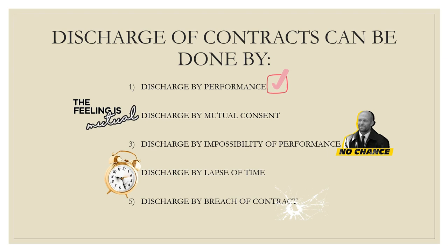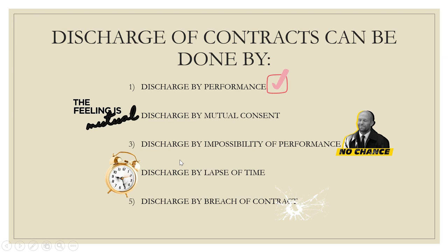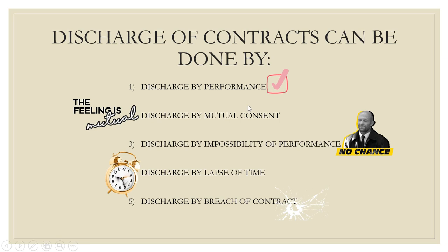Discharge by mutual consent — when two parties have the power to create a contract with mutual consent and free consent, they can also discharge the contract by mutual consent. Next, discharge by impossibility of performance — when there is no possibility to perform the contract because of any kind of circumstance, the contract is discharged by impossibility of performance.